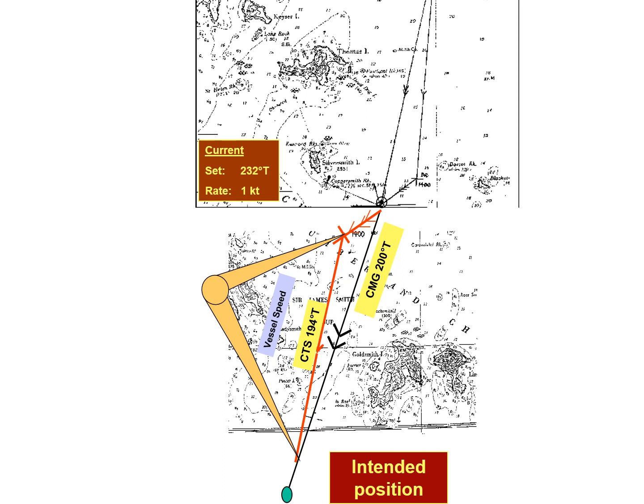When you allow the wind or leeway and the current to affect your course, you always allow for leeway first and then the current — the L in 'allow' matches leeway. When counteracting, you counteract for current first and then leeway — C and C again. So when you allow, you allow for the wind first then current; when counteracting, always counteract current first and then the effect of the wind. I'll show you in the next slide how to do that.